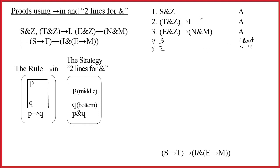Line two, we don't have T and Z, so we can't do arrow out. Line three, we don't have E and Z, so we can't do arrow out. That means we're stuck at the top.